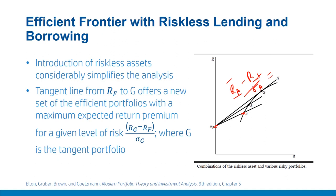The points to the left of A, from RF to A, are the combination of lending at the risk-free rate — that means investment in the risk-free rate and investing in the portfolio. A mixture of investment in RF and RA falls on this line. Conversely, points to the right of A are the combination of borrowing at RF and investing original wealth plus borrowed amount in A. These are called the borrowing segment of the line.